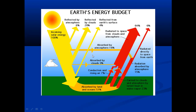This diagram shows the earth's energy budget. Of the incoming solar energy taken as 100 percent: 6 percent is reflected by the atmosphere, 20 percent is reflected by the clouds, and 4 percent is reflected from the earth's surface. Also, 16 percent is absorbed by the atmosphere, 3 percent is absorbed by the clouds, while the remaining 51 percent is absorbed by the land and oceans.